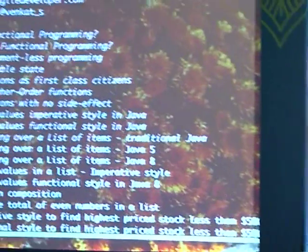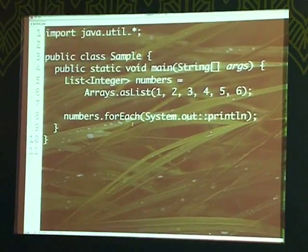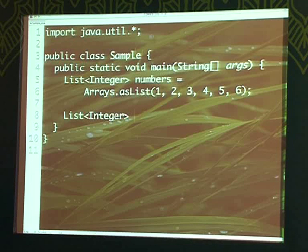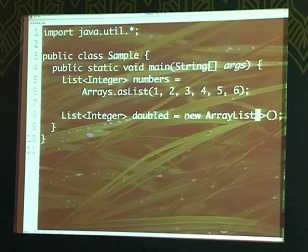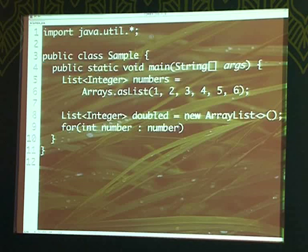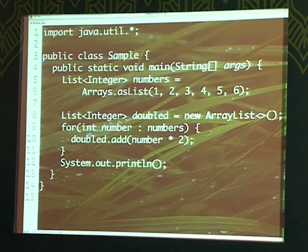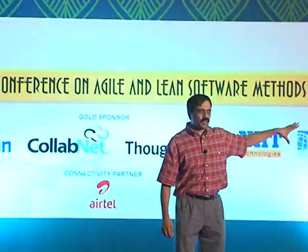We looked at what Java 5 can do and what Java 8 can do. Now I want to double the values in a collection. In imperative style, you'd create a list called doubled equals new ArrayList, then for each int number in numbers, say doubled.add(number * 2), and then print. What do you think of writing code like this? It's very low level. If you're working from home, this is dangerous — if your kid runs into the room and sees this, they'll never want to take up our profession.